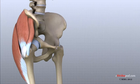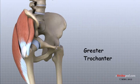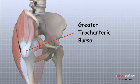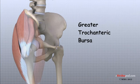A bursa that sometimes causes problems in the hip is sandwiched between the bump on the outer hip, the greater trochanter, and the muscles and tendons that cross over the bump. This bursa, called the greater trochanteric bursa, can become irritated and inflamed, causing a condition called trochanteric bursitis.